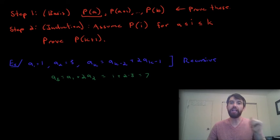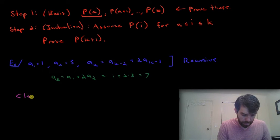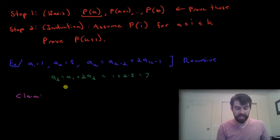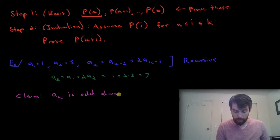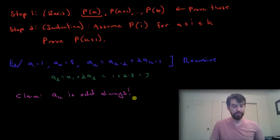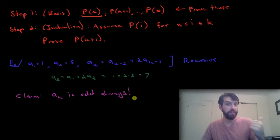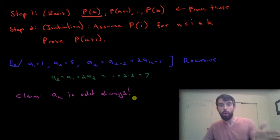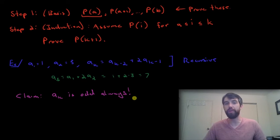Now, I claim the following. I claim that a_k is going to be odd always. We've seen it's true for 1, 2, and 3. We get the values of 1, 3, and 7 out. All three of those values are all going to be odd. But are we convinced that this is always true? So I'm going to prove this claim and I'm going to prove it by strong induction.